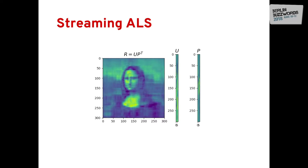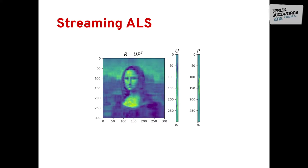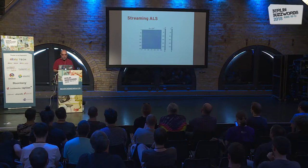This works fine for a single machine, but most people want to implement something at scale in a distributed fashion. We'll look at how to implement this in a distributed way — first how Apache Spark implements the batch version, and then a streaming implementation of this algorithm.